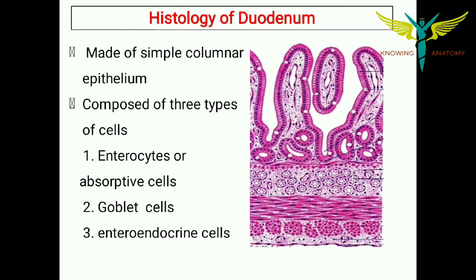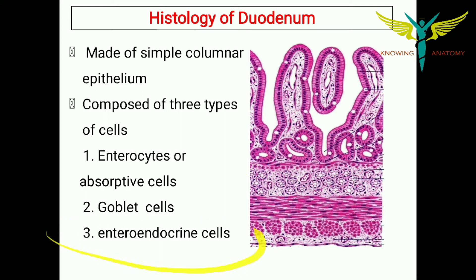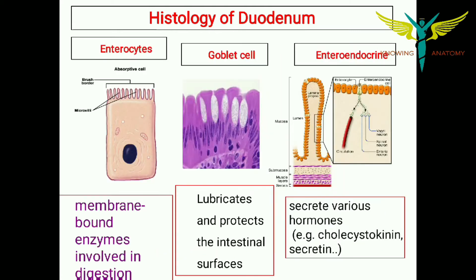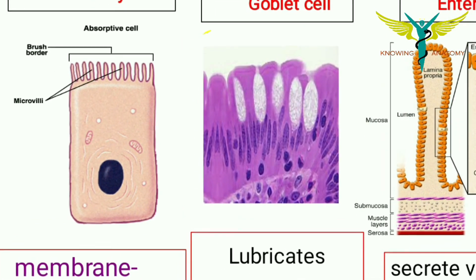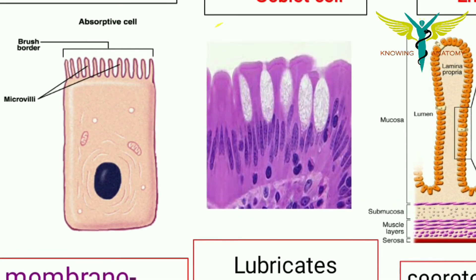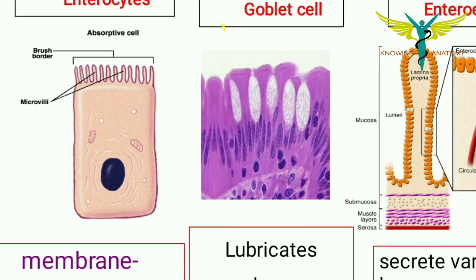The duodenum is made up of simple columnar epithelium, composed of three cell types: enterocytes or absorptive cells, which help in the process of absorption; goblet cells, which help in the production of mucus; and enteroendocrine cells, which help in producing hormones. You can see these three types of cells in the diagram.